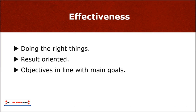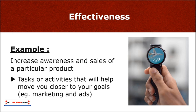In fact, they each carry completely different meanings. Effectiveness is all about doing the right things. It's result-oriented — when one's objectives are in line with their main goals and indirectly your purpose. It's finding ways to improve outcomes. For example, if your goal is to increase awareness and sales of a particular product to reach a particular target, you should engage in tasks or activities that will help move you closer to your goals.